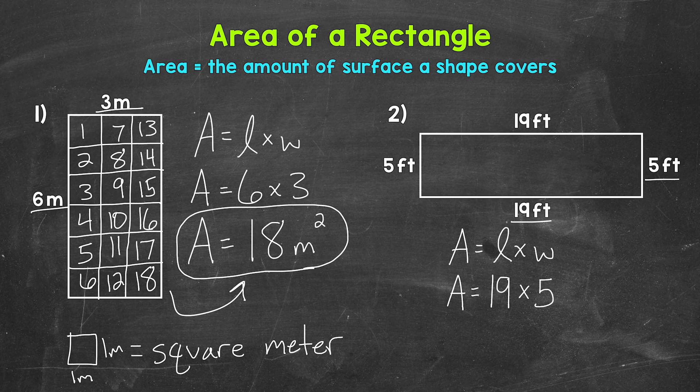So something to keep in mind. Now we can multiply. So 19 times 5 gives us an area of 95 square feet.